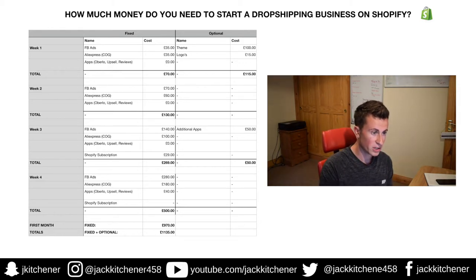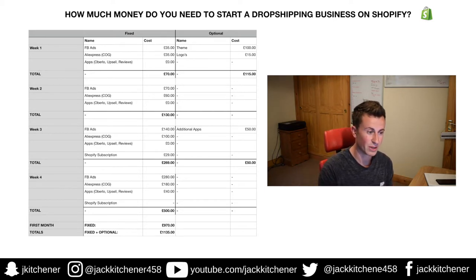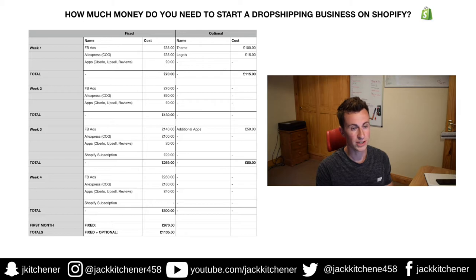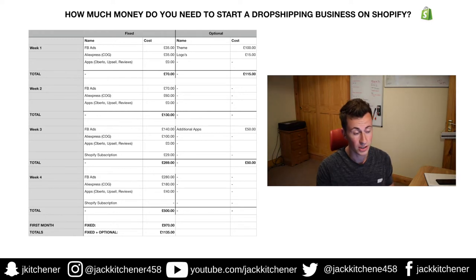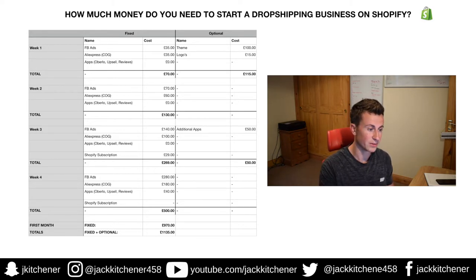For week three's optional extras, I've put £50 for additional apps. Around weeks two to four I started looking for apps to increase conversion rates — things like MailChimp for email marketing or a countdown timer like Hurrify. So I've accounted for that £50 in the optional column.